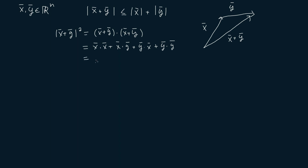Now x dot x is just the magnitude of x squared, and y dot y is the magnitude of y squared. And according to the commutative property of the dot product, x dot y is equal to y dot x. So x dot y plus y dot x is just equal to 2 times x dot y.